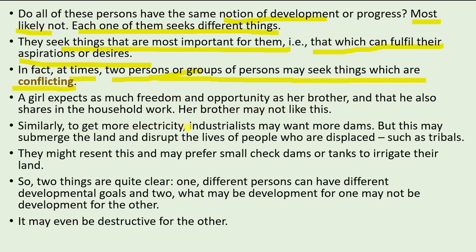Similarly, to get more electricity, industries may want more dams, as dams help produce hydroelectricity. But this may submerge land and disrupt the lives of people displaced from that area, such as tribal people. They might resent this and may prefer small check dams and tanks to irrigate their land — dams that store water for irrigation without displacing communities and destroying their houses and land.